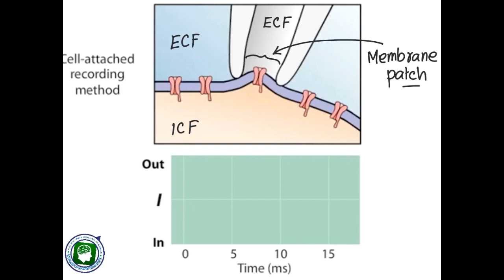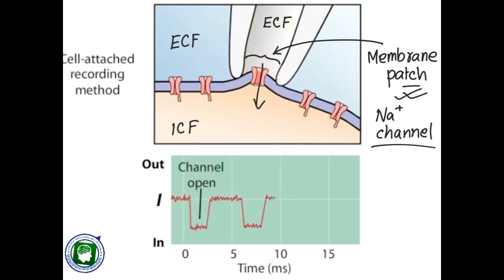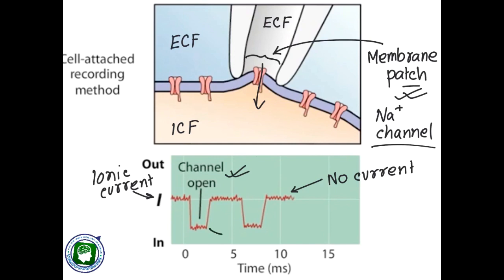If the channel present in that patch of membrane is a sodium channel, there will be entry of positive charge whenever that channel opens. Entry of positive charge means current inside the cell, and it can be recorded by the oscilloscope. Here I refers to ionic current. When the channel is closed there is no current, but when the channel is open the current can be seen. As there is high sodium outside and low sodium inside, there is flow of sodium when the channel opens. But in the case of a potassium channel, the current flow would be to the outside.